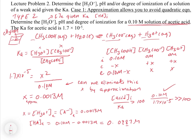The pH equals the negative log of 0.0013 molar, which equals 2.89. The percent ionization equals 0.0013 molar divided by the initial concentration of 0.10 molar times 100, which equals 1.33% — a very small percent ionization, showing one example of a type 2 problem that does not require the quadratic because of that approximation.